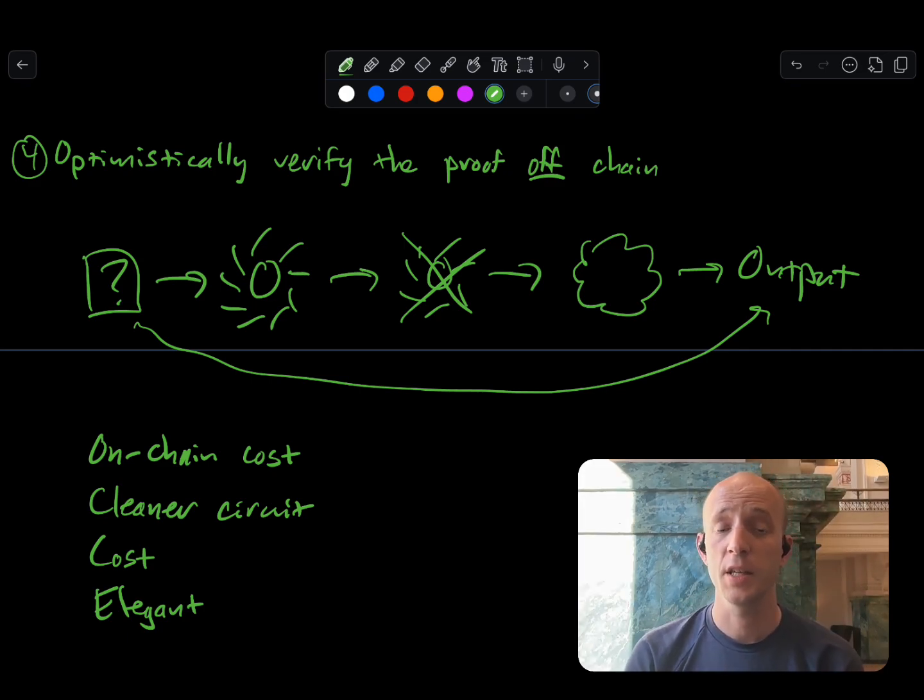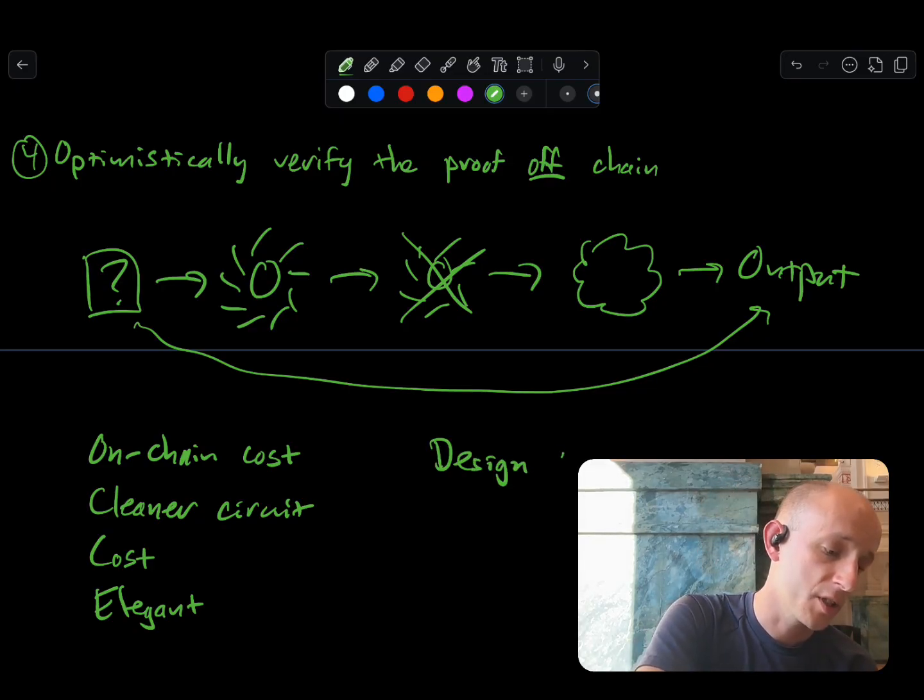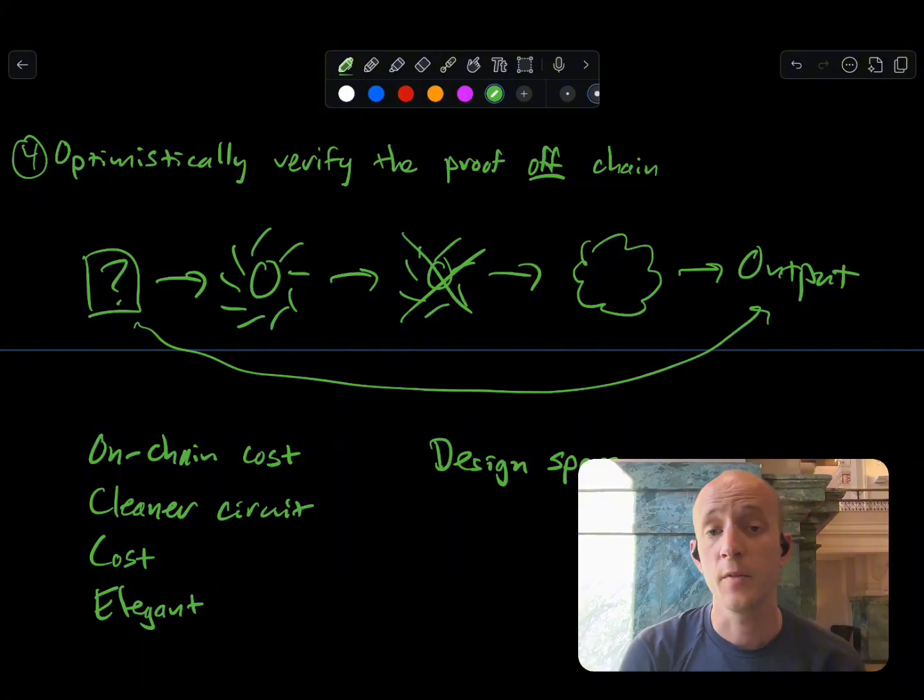In the BitVM1 and BitVM2 designs, we're really hampered by having to do things in Bitcoin script. With Glock, we're much more modular and much more flexible. We're not limited by script anymore. We have a much broader design space, and this lets us pull all sorts of interesting tricks cryptographically and for good engineering.